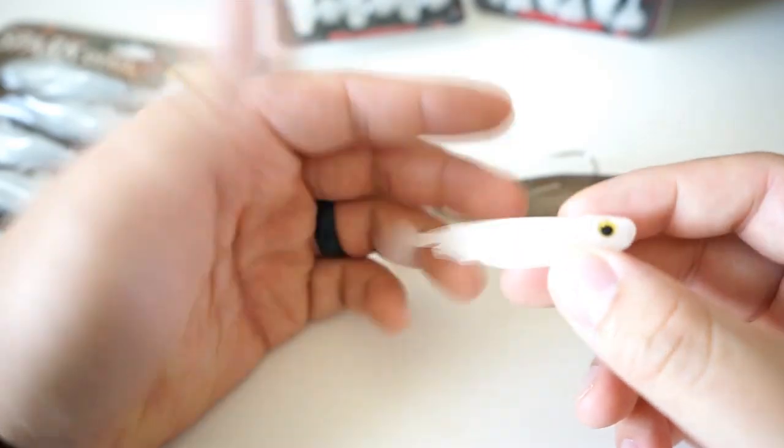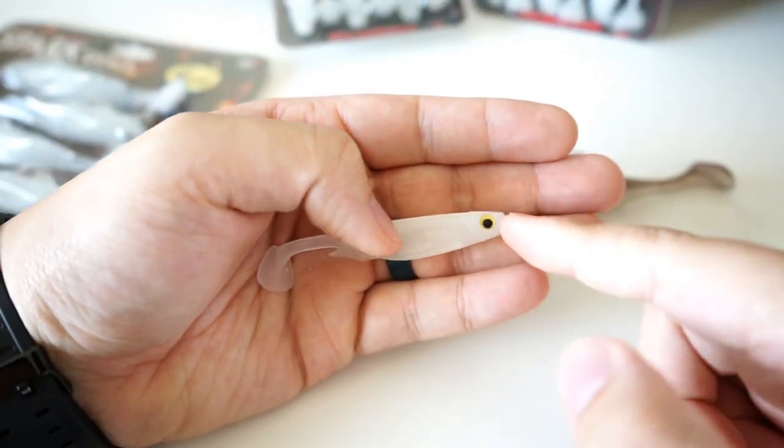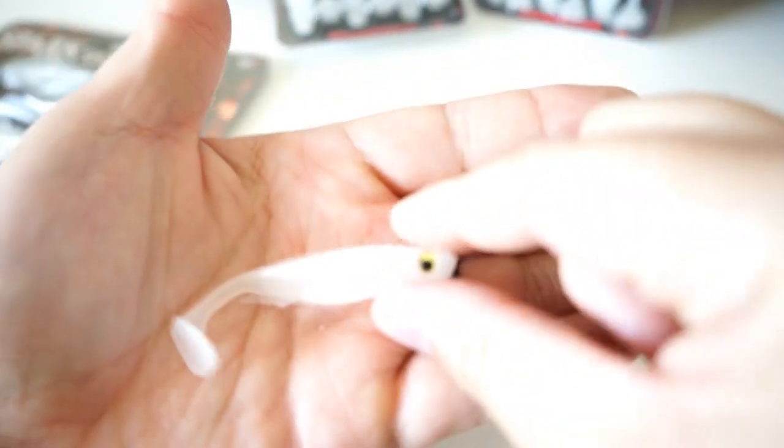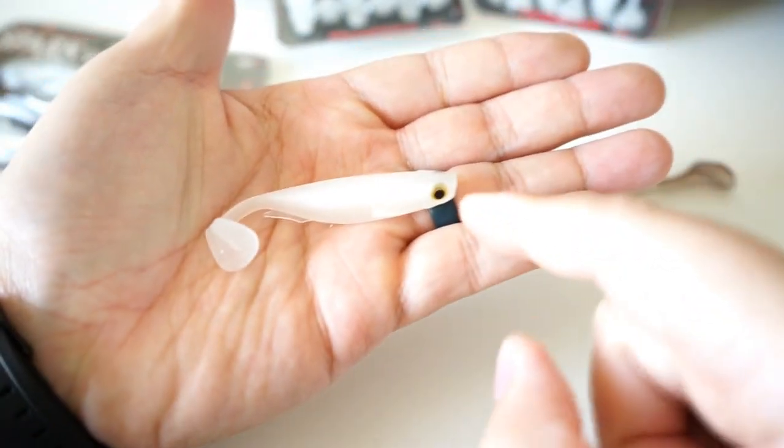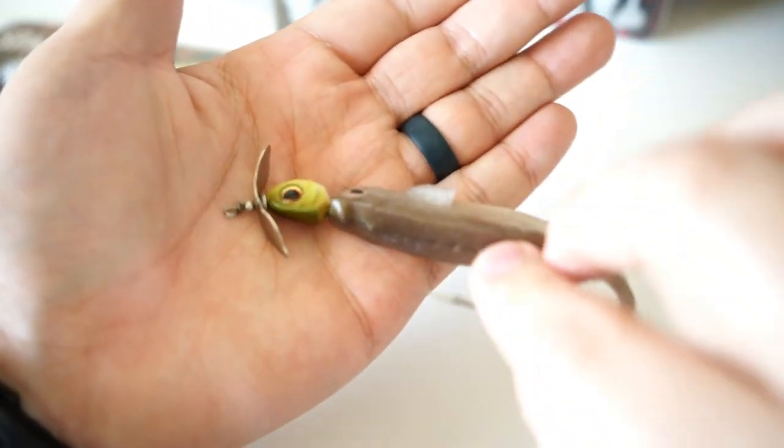This is the 3-inch model. The first thing I like about it is the actual quality of the plastic. The second one is the realistic eyes. You get these awesome realistic eyes on the swimbait here. This is the 3-inch and this is the 4-inch.